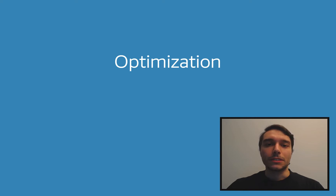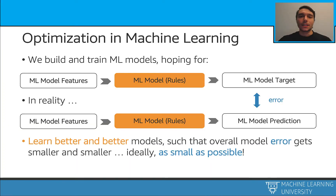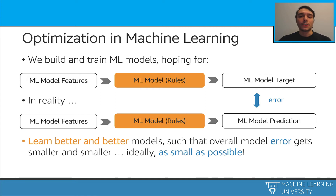Let's talk about optimization. Optimization is an important topic in machine learning. When we are building our machine learning models, we measure the model's performance against some targets. We can call this error. And with the training process, as the model gets better, we hope to see that this error also goes down.